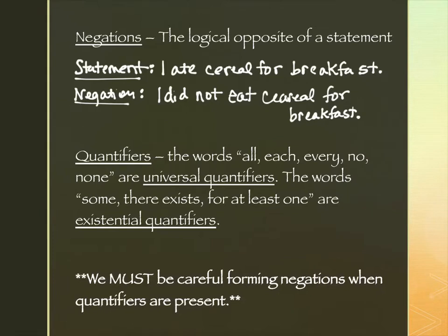Why do I call it a simple statement? Because it doesn't have things called quantifiers. Quantifiers describe how many objects a statement applies to. We're looking for specific words: "all," "each," "every," "no," and "none" — those are called universal quantifiers. They specify that something is true for everything — it's an all-encompassing, universal statement.